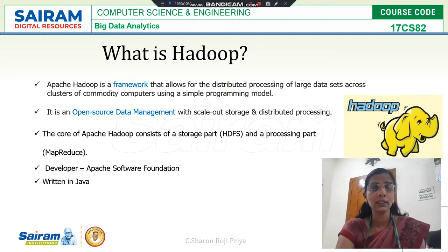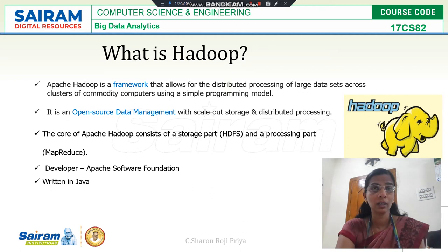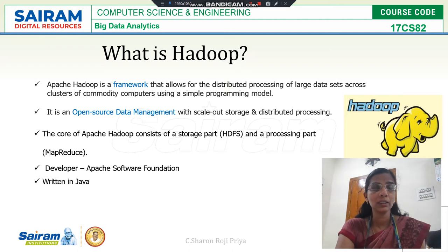The Hadoop framework enables distributed processing of large amounts of data across a cluster of commodity computers. Commodity computer means that in a cluster of computers, if there is a failure in any one node, I should be able to move that node out from the cluster — swap it out. It is an open source data management system with storage and processing capability, developed by the Apache Software Foundation and written in Java.